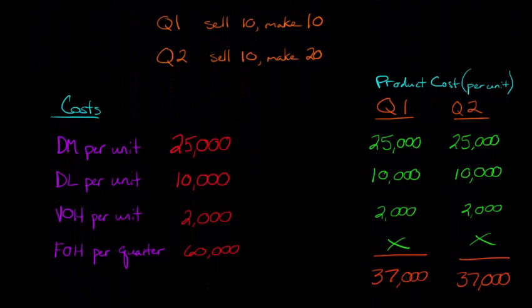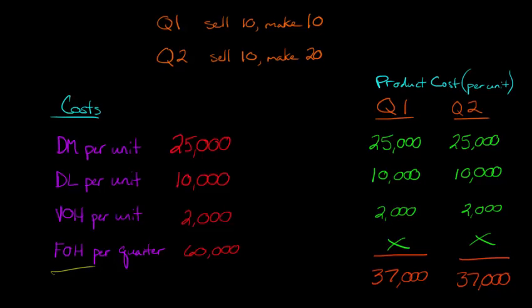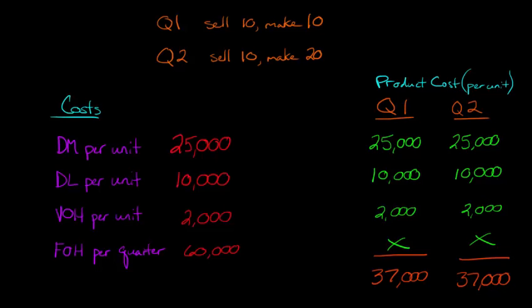When we think about our cost structure: direct materials cost is $25,000 per unit, direct labor is $10,000, and variable overhead per unit is $2,000. The fixed overhead is on a per-quarter basis — $60,000 in quarter one and another $60,000 in quarter two. We need to know the product cost per unit in order to build our income statement and compute cost of goods sold.